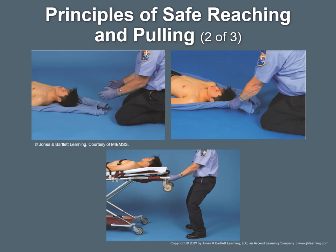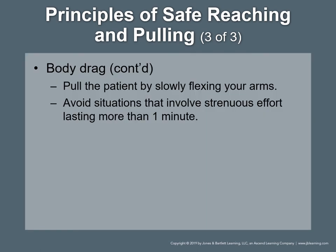Reaching and pulling safely: kneel to pull a patient who is on the ground, with your elbows extending just beyond the anterior torso. Bend your knees to pull a patient who is at a different height, and position your feet or knees to balance the force of the pull. Reposition your feet or knees so that the force of the pull will be equally balanced and centered. Pull the patient by slowly flexing your arms. When your hands reach the front of your torso, stop and move back another 15 to 20 inches. Alternate between pulling the patient by flexing your arms and repositioning yourself. Avoid situations that involve strenuous effort lasting more than one minute.